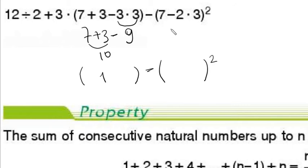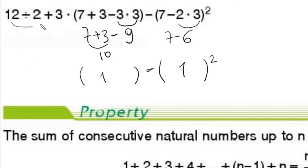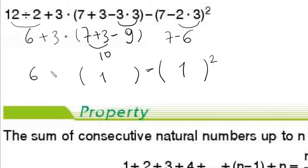We have a power here, so first multiplication: 2 times 3 is 6. Then 7 minus 6 equals 1. Then we have a division: 12 divided by 2 is 6. So we get 6 plus 3 times 1 minus something.